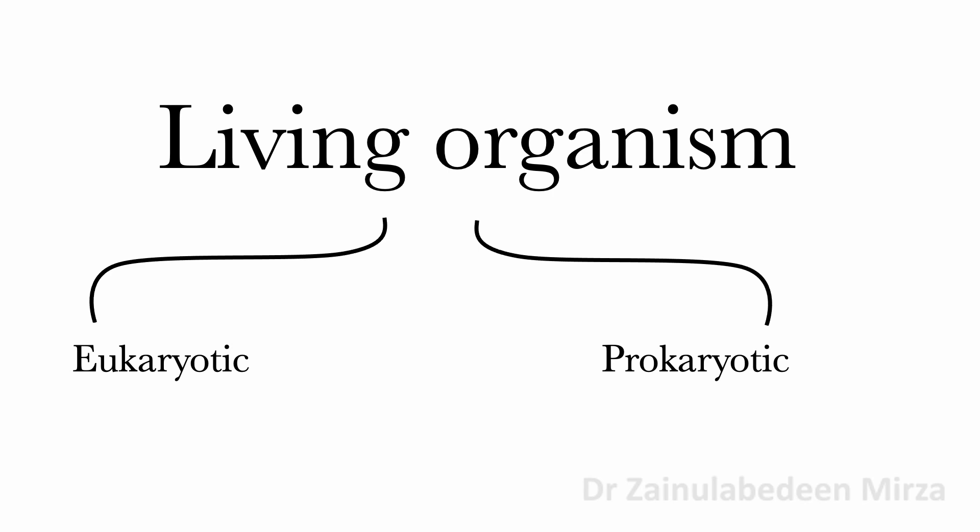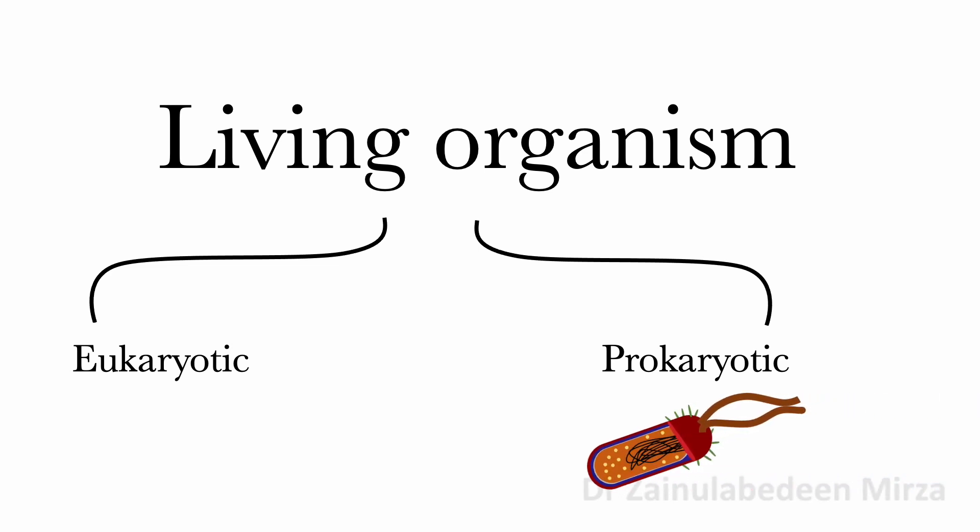Eukaryotes and prokaryotes, such as bacteria, are two types of cells. Prokaryotic cells consist of a single closed compartment which has a plasma membrane, as shown in the image.